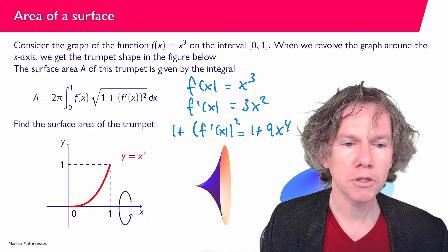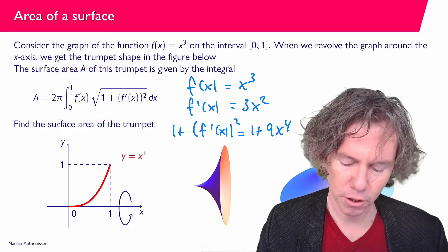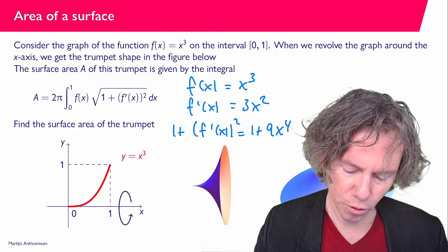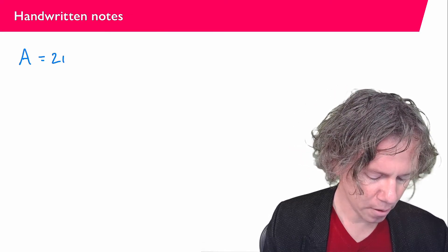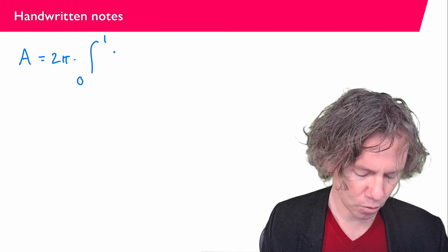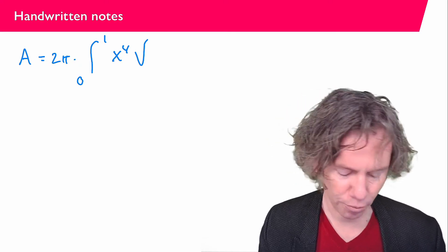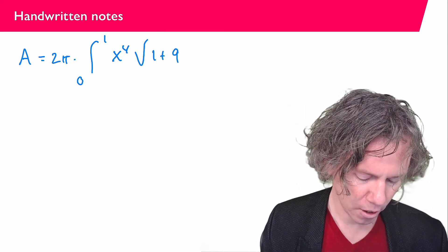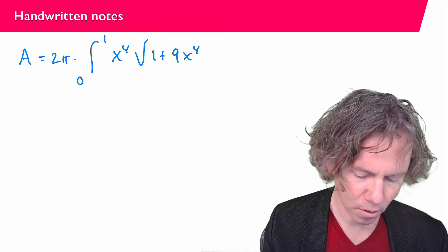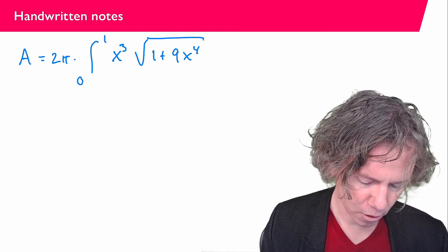So let's plug this into the integral, into this expression here and see what we get. So let's go to a new slide for that. And what we now find is that the area that we need to compute, so A is 2π times the integral from 0 to 1, and then we have f(x) which is x to the power 3. And then the square root 1 plus f prime squared, and we found in the previous slide that that is 9 times x to the power 4. This should of course be a 3. Sorry about that. Like this. dx.